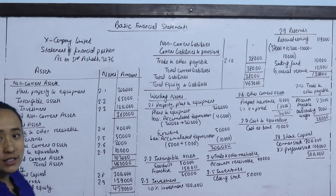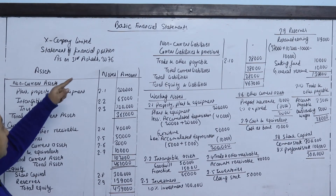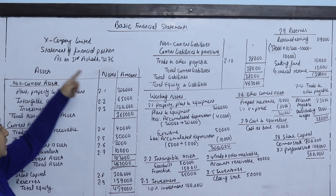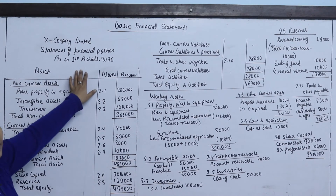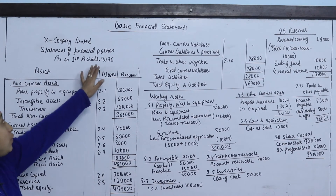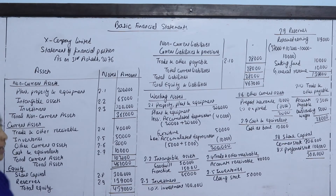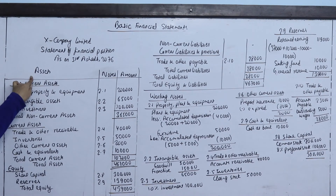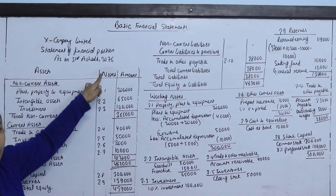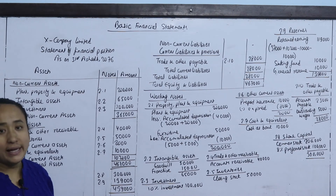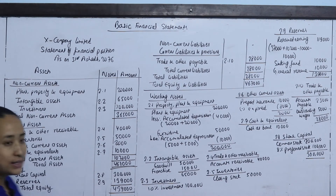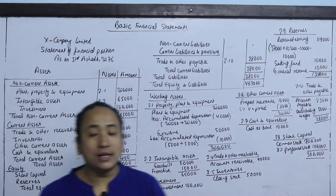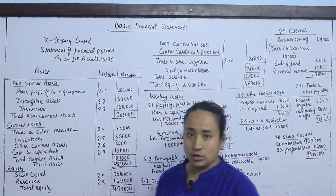In part B, we prepare the Statement of Financial Position for X Company Limited as on 31st Ashad 2076. The format includes Assets with Notes and Amount columns. First, we use non-current assets, also called long-term assets.